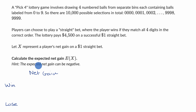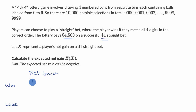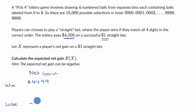In the scenario where you win, you pay $1 — we know it's a $1 straight bet — and you get $4,500. So the net gain is $4,500 minus $1, which equals $4,499. In the situation that you lose, you just lose a dollar, so that's negative $1.